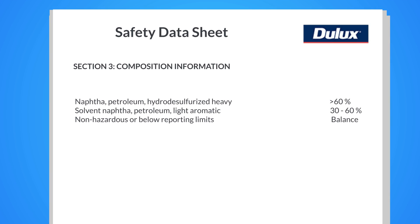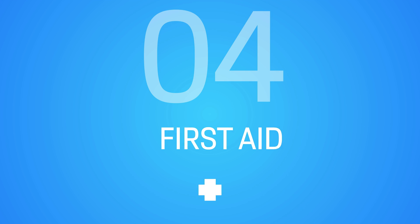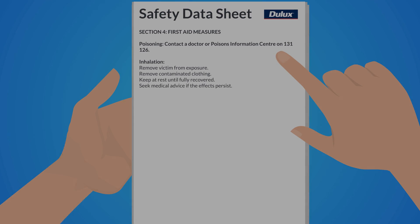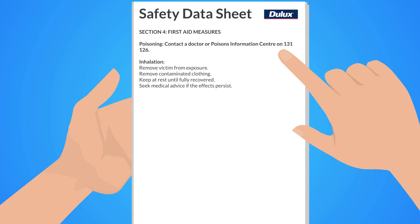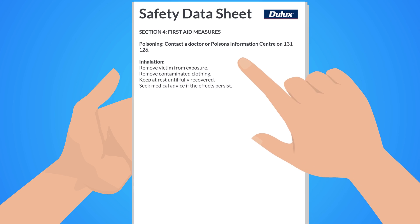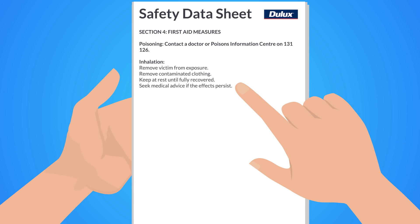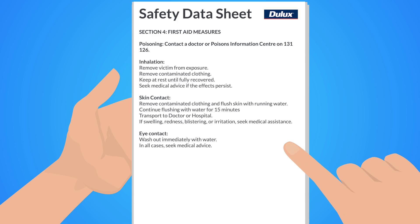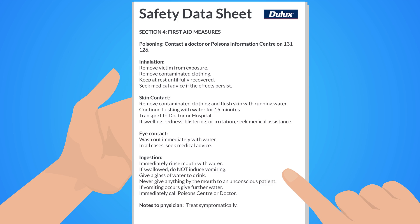Section 3 provides information on the proportions of the hazardous ingredients. Section 4 is where you need to go to find first aid information, starting with the poison's information center number and the first aid treatment for inhalation. Then we have the first aid treatment for soft tissue contact, rounding off with first aid for ingestion and notes for the treating doctor.